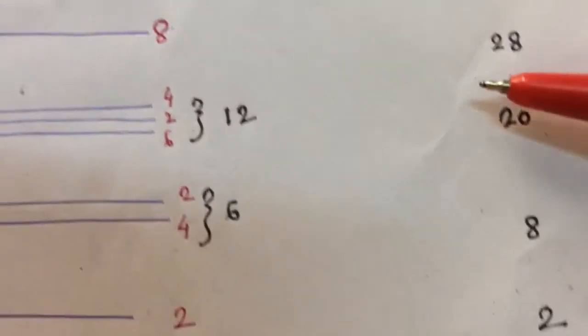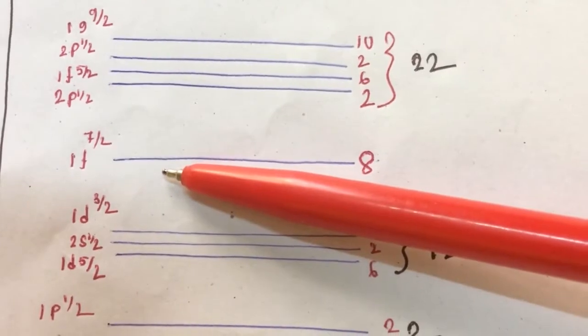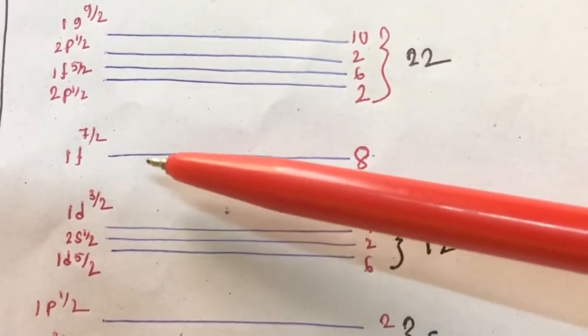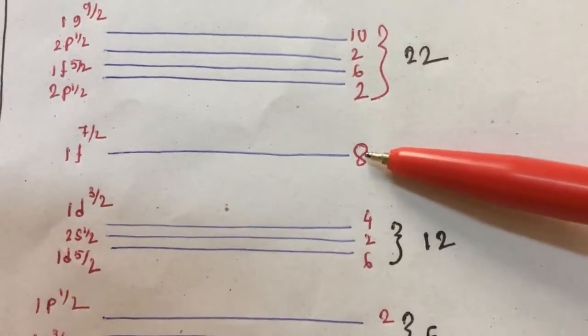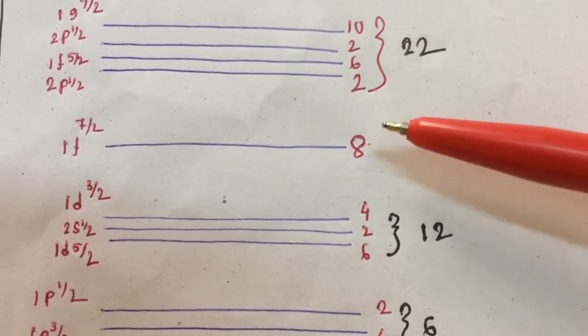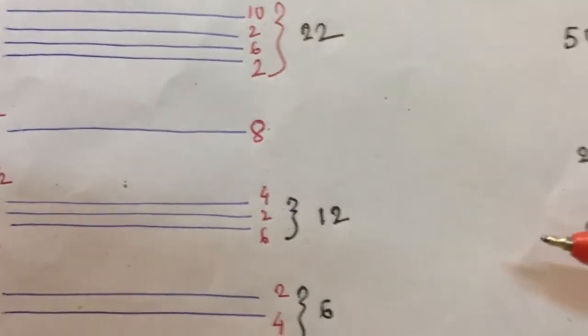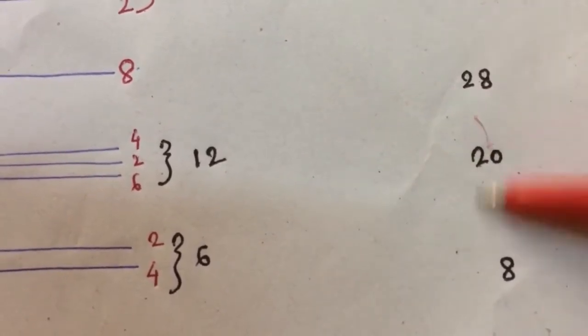Another magic number is 28. For 1f7/2, where 7/2 is the total J value, the number of particles is 8. It's either 8 neutrons or 8 protons. If we add to the previous 20, we get 28.